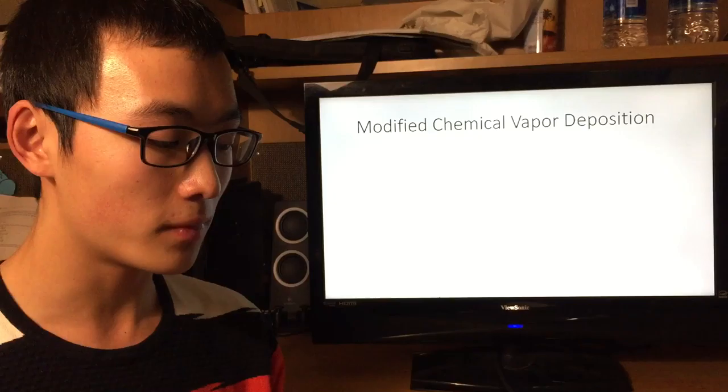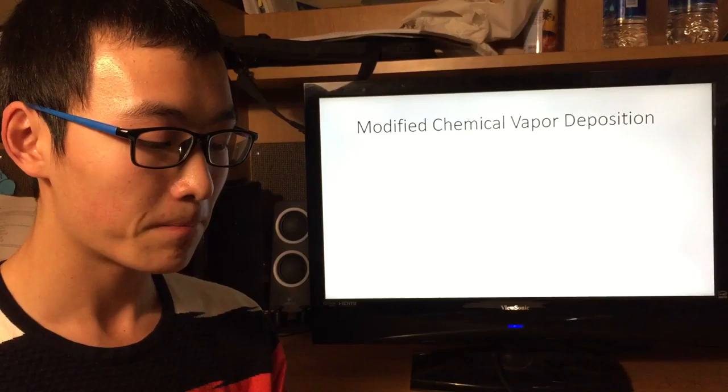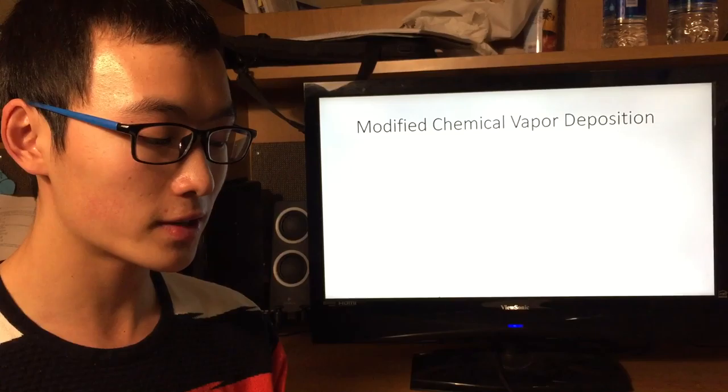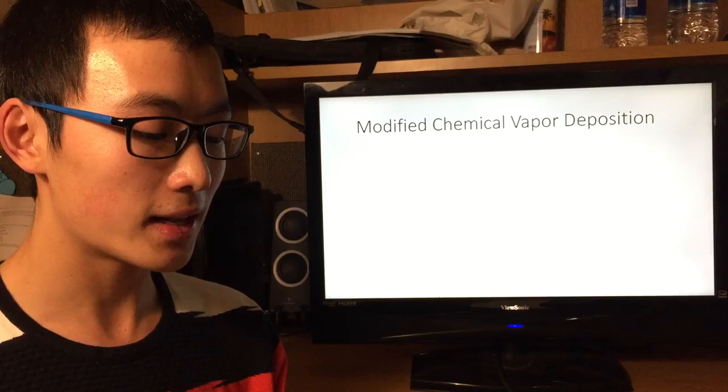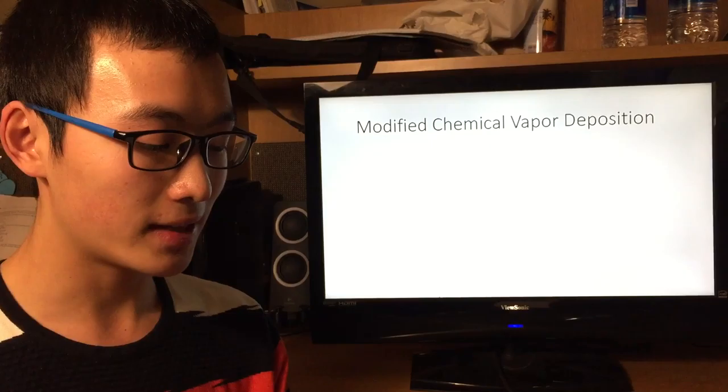Making a preform involves a chemical process known as modified chemical vapor deposition. This process involves bubbling oxygen through various chemical solutions including germanium chloride, silicon chloride, and other chemicals.